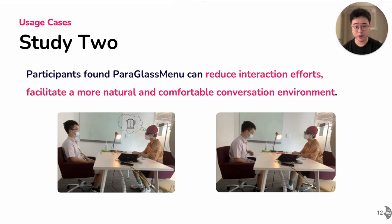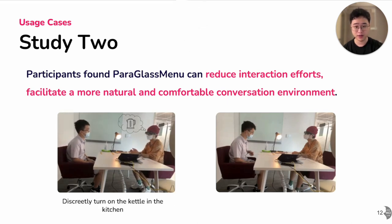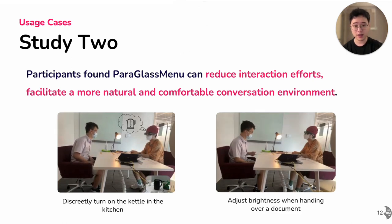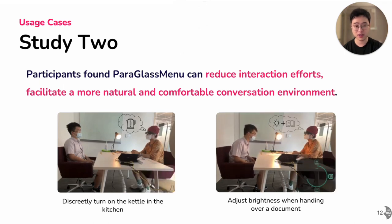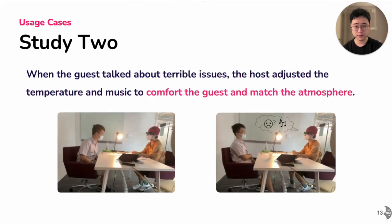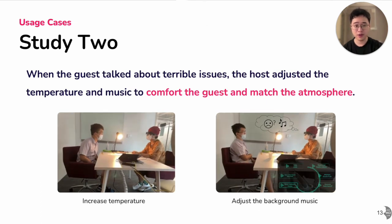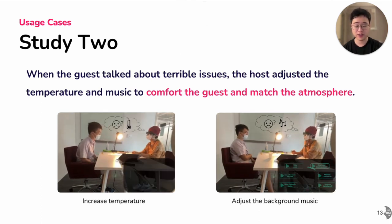I want to show you four usage cases from the participants. First, the host discreetly turns on the kettle in the kitchen to avoid disrupting the conversation. He also adjusts the brightness when handing over documents to the guest to create a better reading environment. When the guest talks about a difficult issue, the host adjusts the temperature and music to comfort the guest and match the conversation atmosphere.